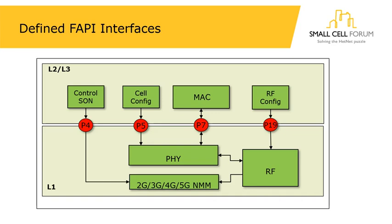Pulling out exactly where FAPI is — going back to history, over a decade ago a group of companies in the Small Cell Forum got together, stood in front of a whiteboard, and drew what a small cell was made from, labeling interfaces P1, P2, P3. Over the history of FAPI that's been refined and we've ended up with four interfaces today. P4 sits between our control and SON — the self-organizing network — and connects to an NMM, a network monitor mode, which can look for 2G, 3G, 4G, and 5G cells and report back information to the SON, giving it a clear view of the radio environment.